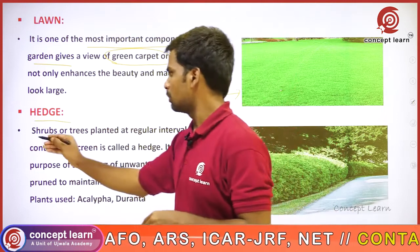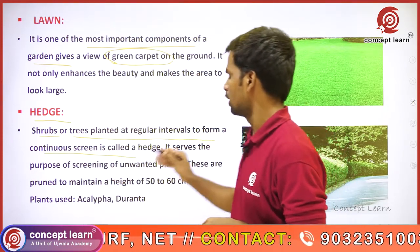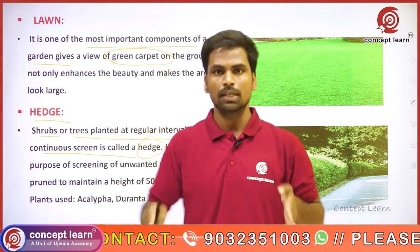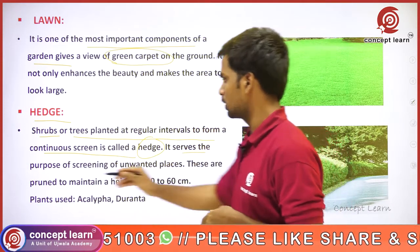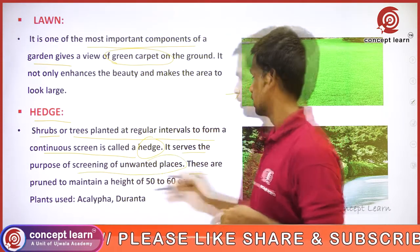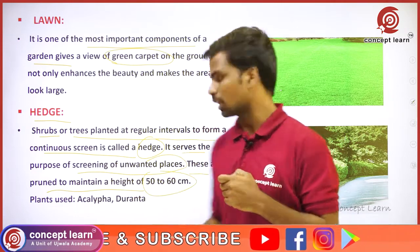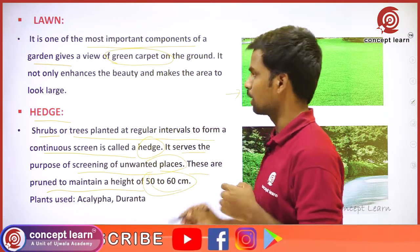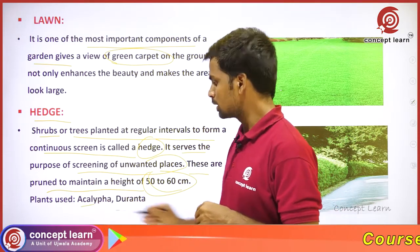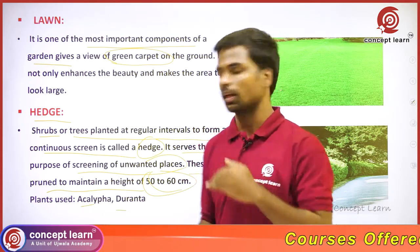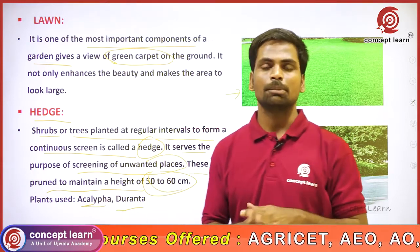Hedge is nothing but strips or trees planted at regular intervals to form a continuous screen, called a hedge. In this hedge, we can grow paths from two sides. It serves the purpose of screening unwanted places. The screen is pruned to height and maintained. We can plant hedge plants in 50 to 60 cm sites. Plants commonly used are Acalypha and Duranta — these two are used for hedge purposes.